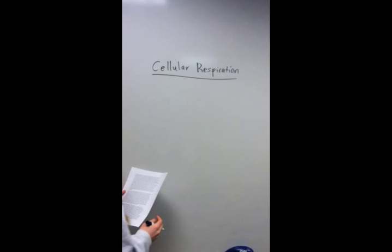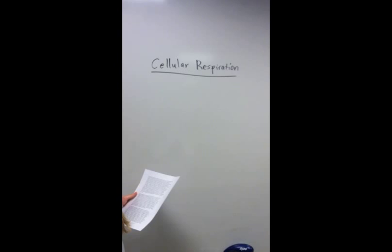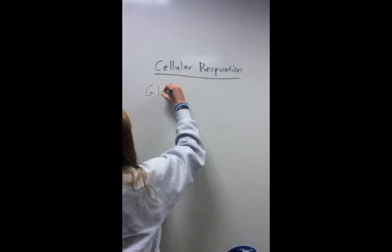There are three steps to this process: glycolysis which occurs in the cytoplasm, the Krebs cycle or the citric acid cycle which occurs in the matrix of the mitochondria, and the electron transport chain which occurs in the inner membrane of the mitochondria.